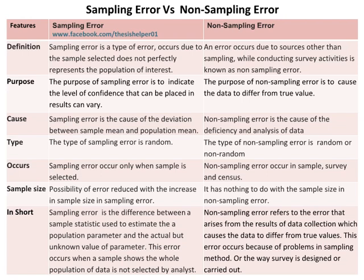Sampling error is the cause of the deviation between sample mean and population mean. Whereas non-sampling error is the cause of the deficiency and analysis of data. The type of sampling error is random, whereas the type of non-sampling error is random or non-random.